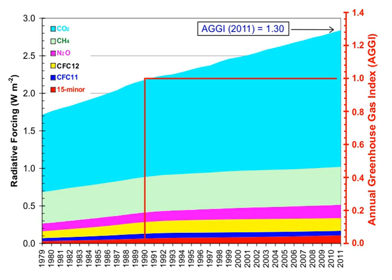Methane has an atmospheric lifetime of 12 ± 3 years. The 2007 IPCC report lists the GWP as 72 over a time scale of 20 years, 25 over 100 years, and 7.6 over 500 years. A 2014 analysis states that although methane's initial impact is about 100 times greater than that of CO2, because of the shorter atmospheric lifetime, after six or seven decades the impact of the two gases is about equal, and from then on methane's relative role continues to decline. The decrease in GWP at longer times is because methane is degraded to water and CO2 through chemical reactions in the atmosphere.